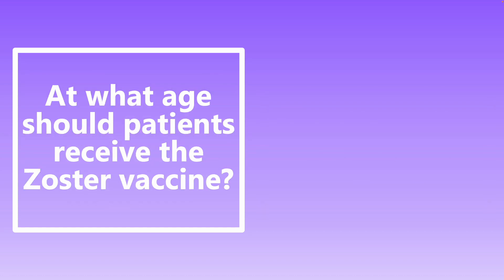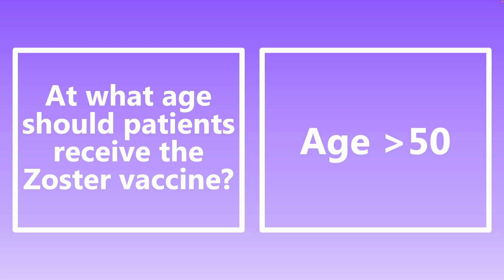At what age should patients receive the zoster vaccine? The zoster vaccine should be administered in patients who are over 50. This vaccine prevents reactivation of the varicella zoster virus, hopefully preventing shingles in elderly patients — which can be very uncomfortable and painful.